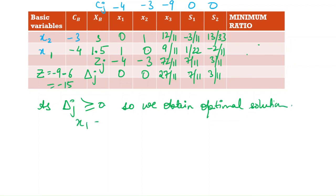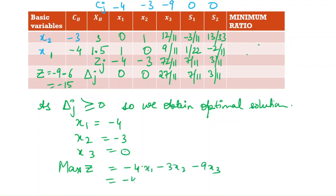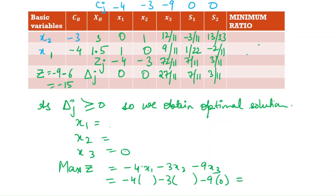The optimal solution is: x1 = 3, x2 = 1.5, x3 = 0. Substituting into Z = -4x1 - 3x2 - 9x3: Z = -4(3) - 3(1.5) - 0 = -12 - 4.5... giving Z = -15. We can cross-check and we get the same value of Z = -15, which is the solution to this LPP using the two-phase method.